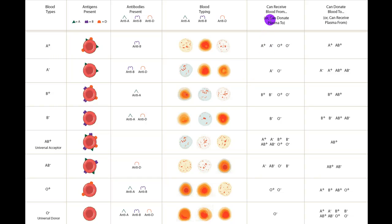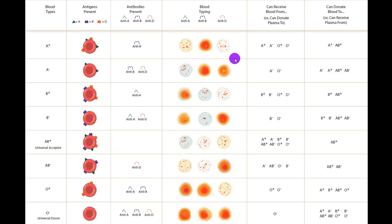When considering who can receive blood, you can receive blood from anyone you do not have an antibody against. A positive individuals have anti-B antibodies, so they can receive blood from anyone without the B antigen — that leaves A positive, A negative, O positive, and O negative. A negative individuals have anti-B and anti-D antibodies, so they can only receive from A negative and O negative.